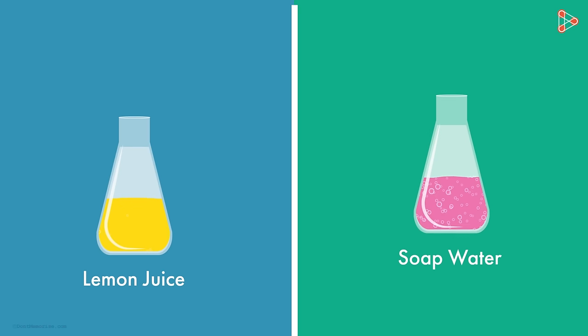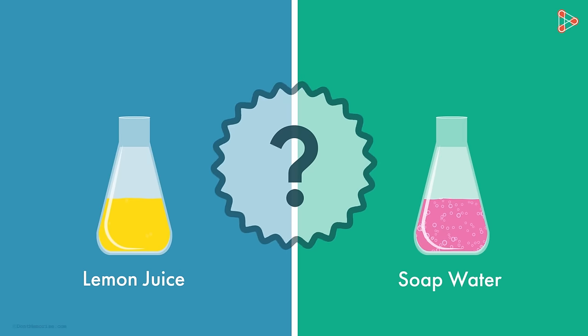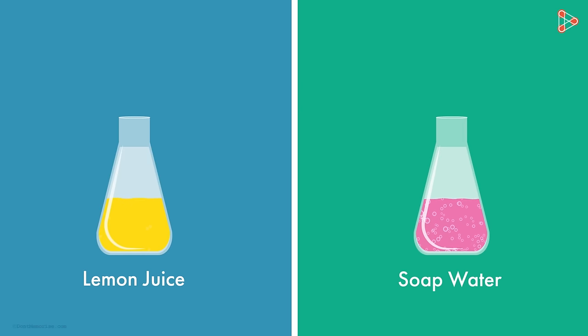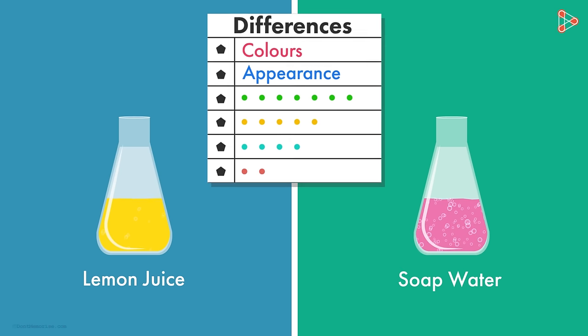If we are given lemon juice and soap water in two different beakers, will we be able to list the difference between the two? Perhaps the list will begin with the different colours, appearance and so on. But these are just properties that we can see. Are these the only differences?